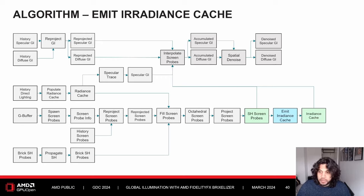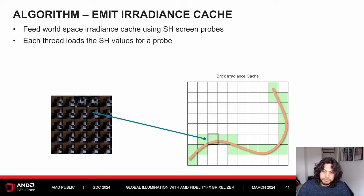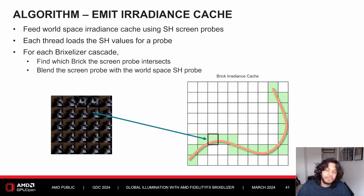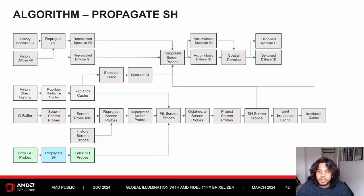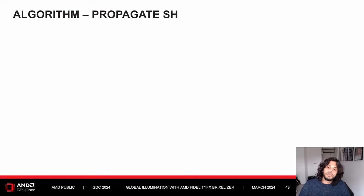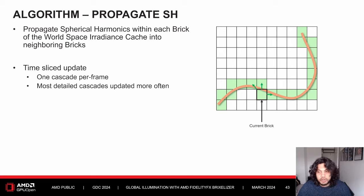Now the screen probes are in a format that can be accumulated into the irradiance cache. We use the previously created SH probes to feed the world space irradiance cache — each thread loads a single SH probe, then for each Brixelizer cascade finds which brick the probe intersects and blends the screen probe with the SH probe in the world space irradiance cache. We then propagate the irradiance from each brick's SH probes into neighboring bricks in a time-sliced update, updating one cascade per frame with more detailed cascades updated more frequently.